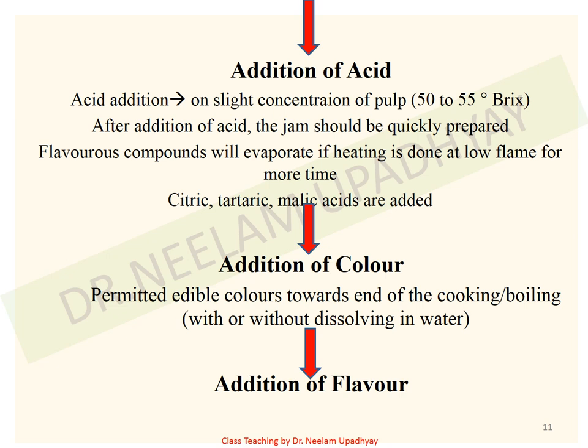It is recommended that acid is to be added once the pulp is slightly concentrated, at around 50 to 55 degrees Brix. Once acid has been added, the jam should be quickly prepared till the end point of 65 percent total soluble solids, because if not done quickly, some flavorous compounds may evaporate during the cooking or heating process.